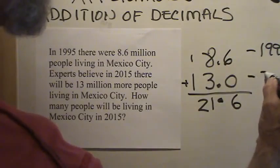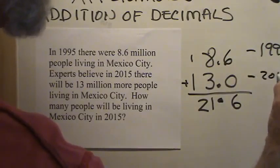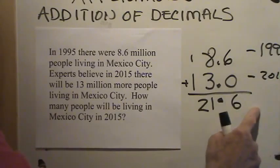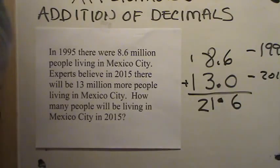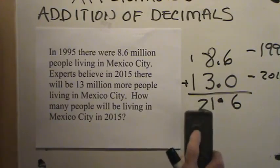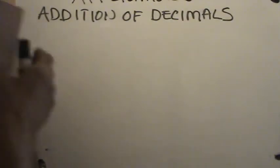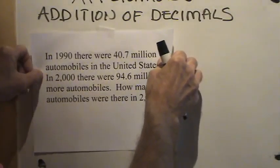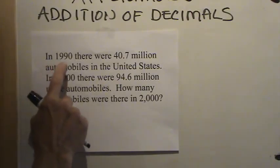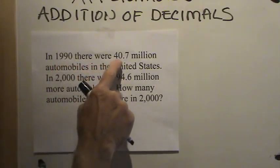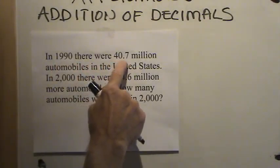6 and 0 is 6. 8 and 3 is 11, so I carry 1. 1 and 1 is 2. So in 1995, there were 8 and 6-tenths million people, and they're telling us in 2015 there'll be 13 million more. So we added those two together, and in 2015, if the experts are correct, there will be 21 and 6-tenths million people living in Mexico City.